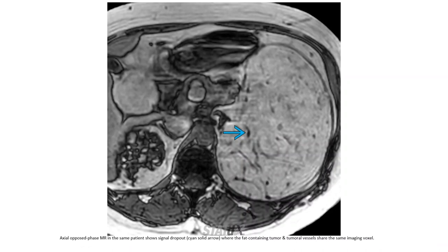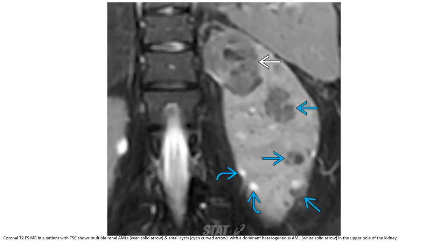Opposed-phase images in the same patient show signal dropout where the fat-containing tumor and tumoral vessels are present. T2 fat-saturated images show multiple bilateral angiomyolipomas with cysts and a dominant heterogeneous angiomyolipoma in the upper part of the kidney.